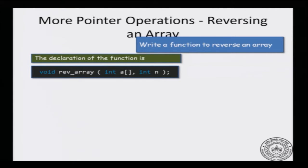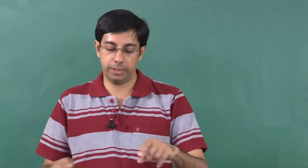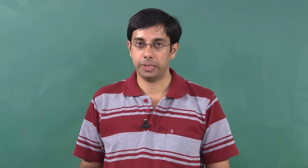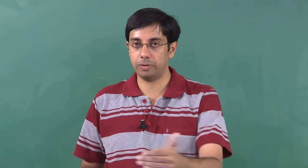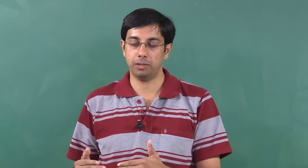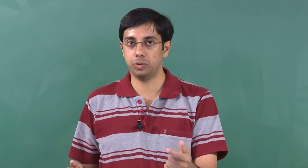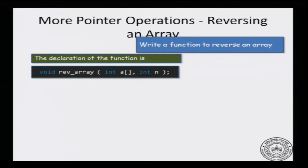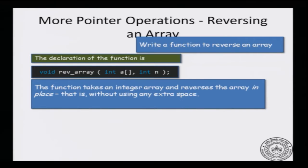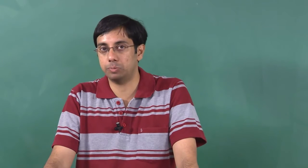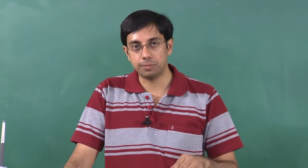If you have to reverse an array, one way to do it is: take the array, copy it into another array, and then copy it back in reverse fashion. You have array a, copy all values into b, and then copy those values back so that b's last value goes to a[0], b's second last value goes to a[1], and so on. But let us try to do it slightly more cleverly — we want to reverse the array in place, meaning using no extra space. Do not use an extra array; reverse it within a itself.